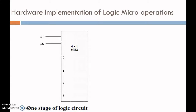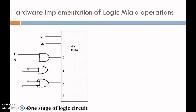At the zeroth input of the multiplexer we attach A AND B. The output of the OR gate is attached to input 1. The output of the EXCLUSIVE OR gate is attached to the second input of the multiplexer, and a NOT gate is attached to the third input. Based on the selection line, the multiplexer performs the operation and the result is displayed on output line EI.